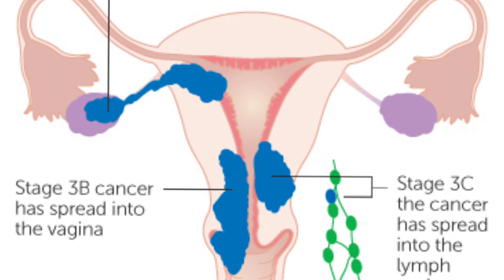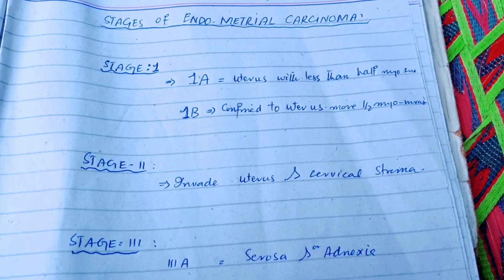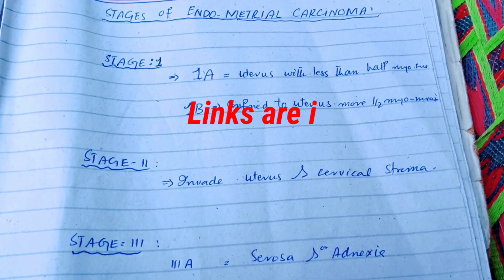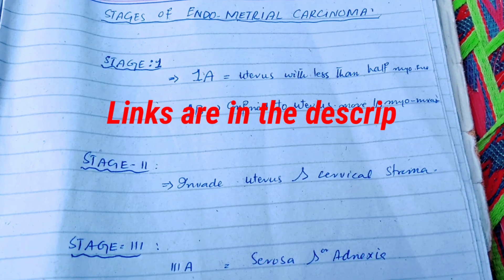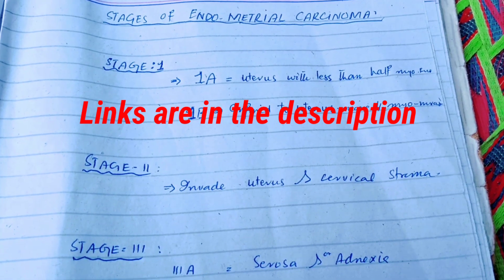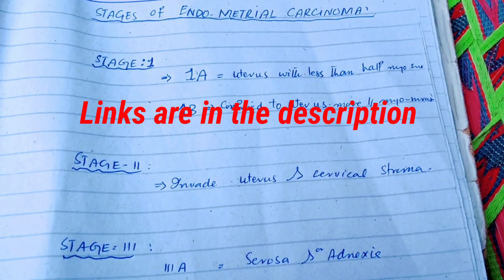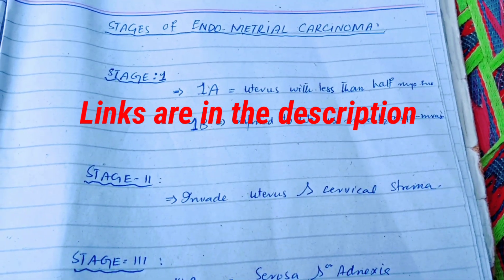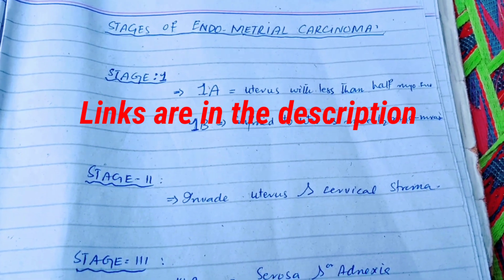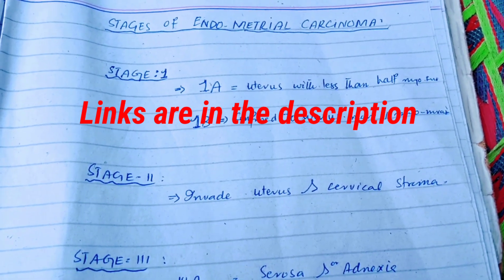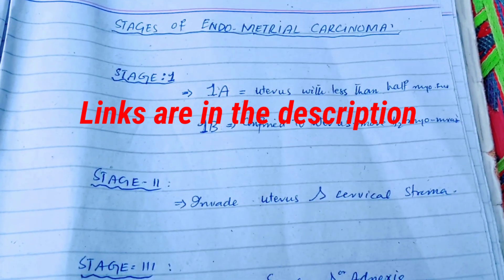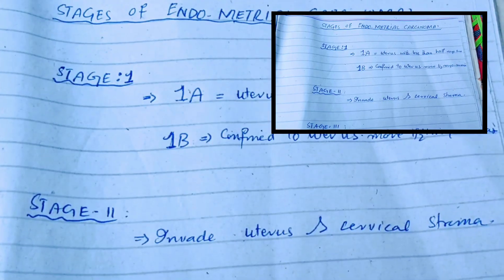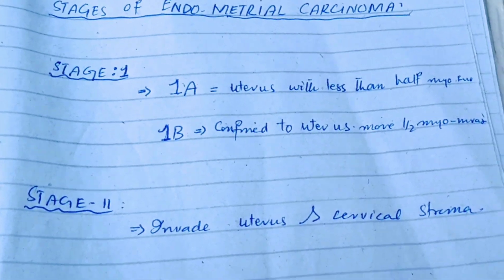The previous video covered the proliferative lesions, including endometrial hyperplasia, endometrial carcinoma, and also the lesions of endometriosis. You can find the link to that video in the description. Now, the stages of endometrial carcinoma — there are four stages.